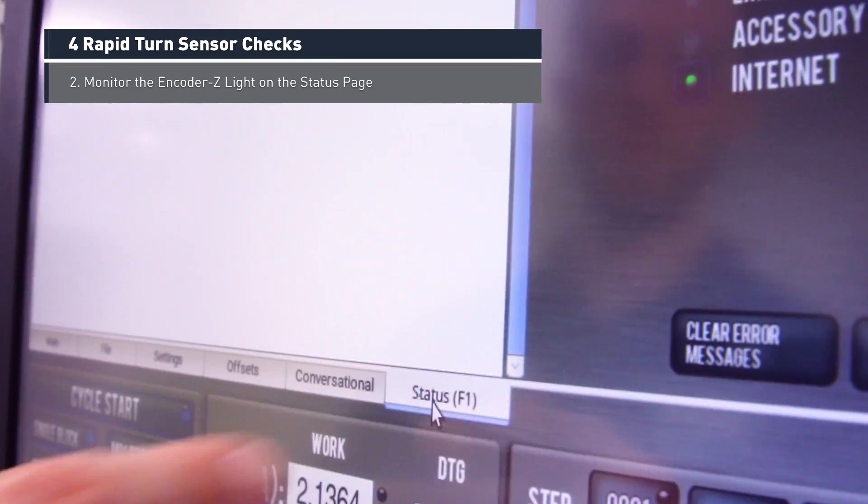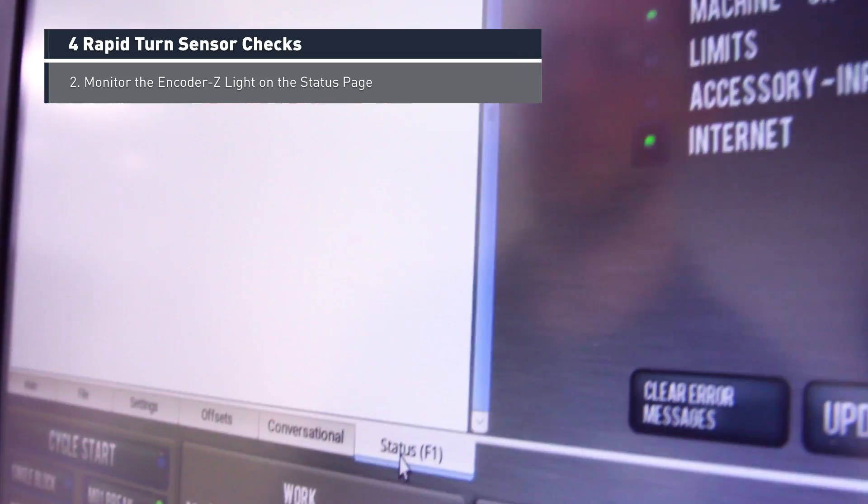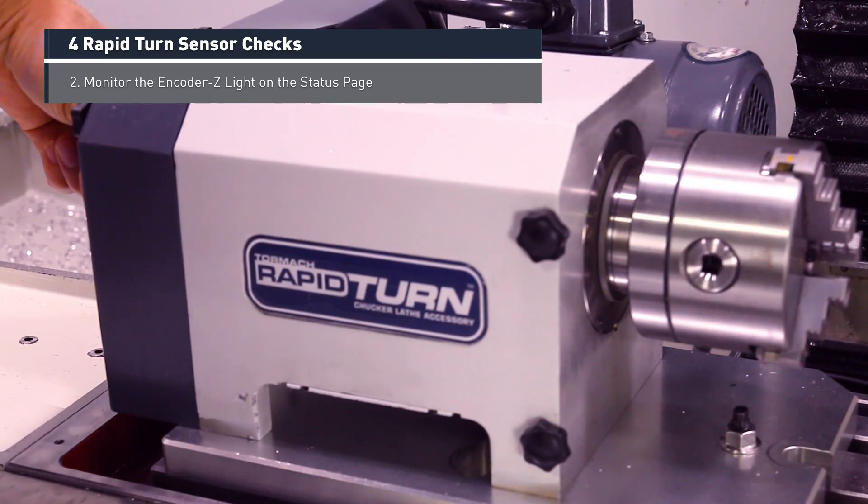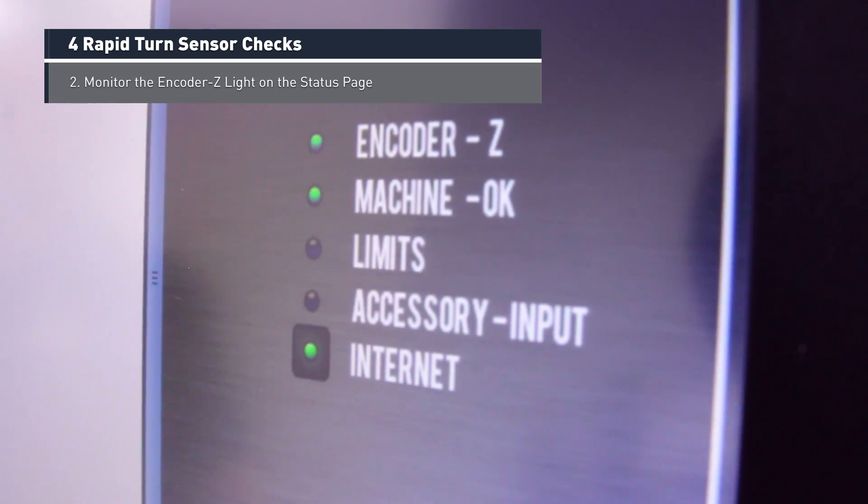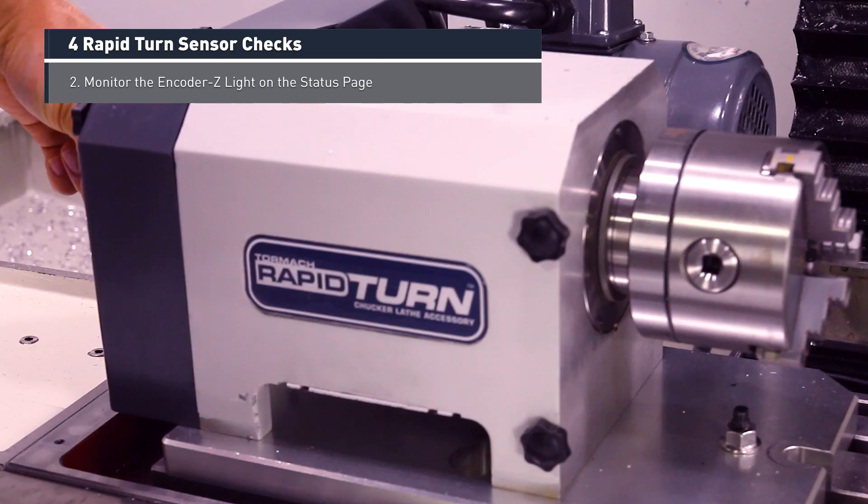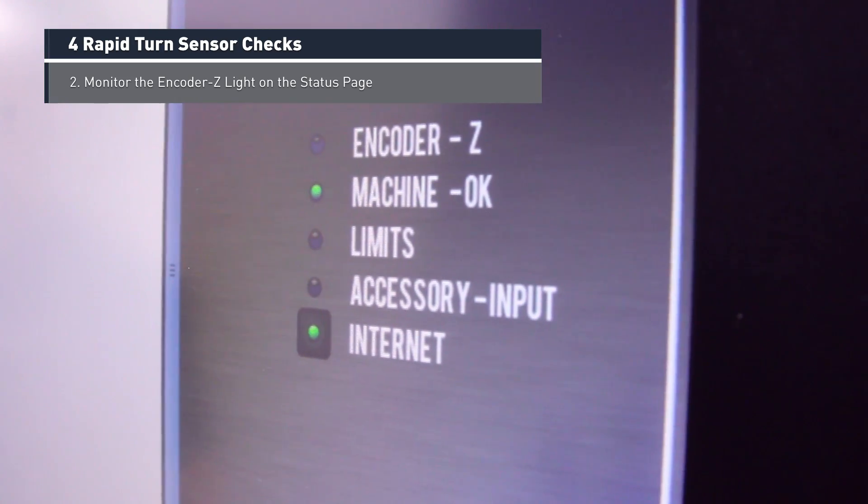The second check we can do is just to go to the status page and manually turn the spindle over by hand. In the upper right corner you'll see the encoder Z light. As we rotate the spindle around we should see that light flash one time per revolution. So if we don't see that light we definitely have a problem, but if we do see it, it doesn't necessarily mean that the sensor is working properly.